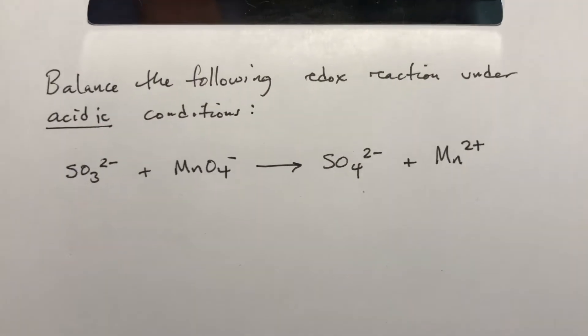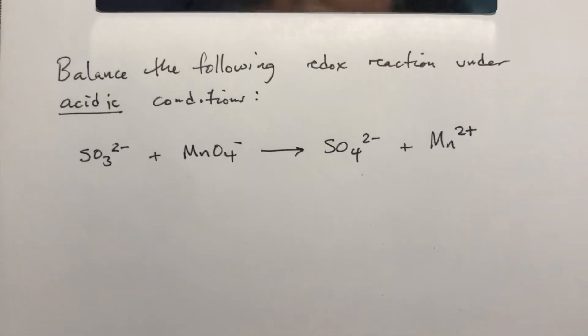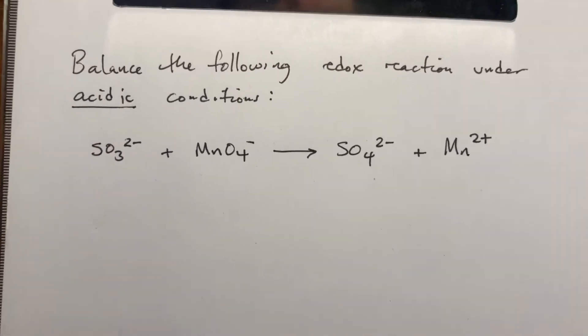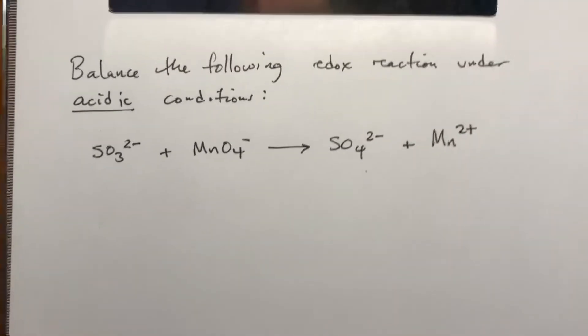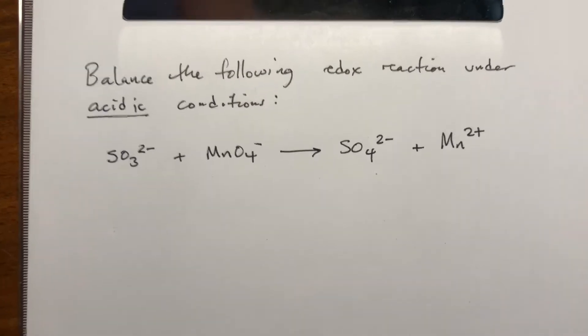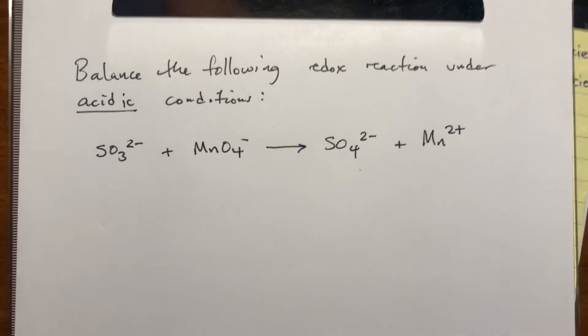Unfortunately, balancing redox reactions is not quite as straightforward as just balancing regular reactions. The first thing we're gonna do is split it into the two half reactions, the reduction half reaction and the oxidation half reaction. I will tell you that for this part of the process you don't actually need to know which one's oxidation, which one's reduction, as long as you know to split them.